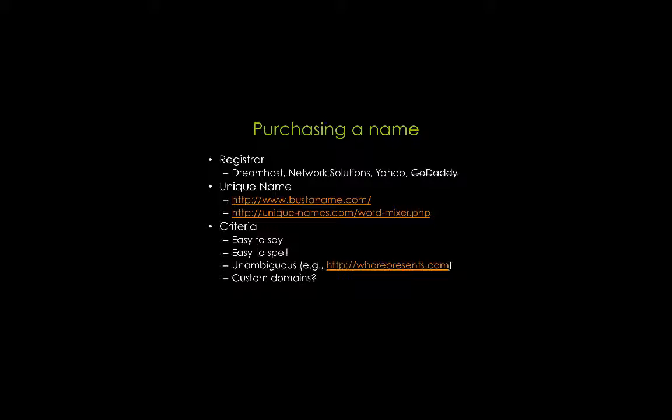When you create a website, it's very important to make sure it fits certain key criteria. First, it should be easy to say, spell, and be unambiguous. For example, one website looks like 'whore presence' but it's actually supposed to be 'who represents.' A similar site in the past was called Experts Exchange — but if you read it the wrong way, it looks like 'Expert Sex Change.'